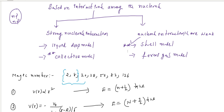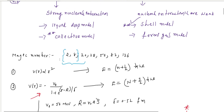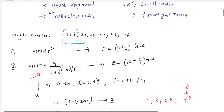Most of the nucleons are paired, so a pair of nucleons contributes zero nuclear spin and zero magnetic momentum. The properties of the nucleus are determined by the single unpaired nucleon.